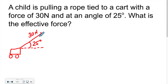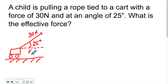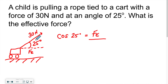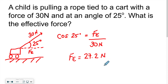Since this is a flat surface, we're going to use cosine. The effective force is always in the same direction as — parallel to — the movement. So cosine of 25° equals the effective force over the hypotenuse, which is the applied force of 30 Newtons. This gives us an effective force of 27.2 Newtons.